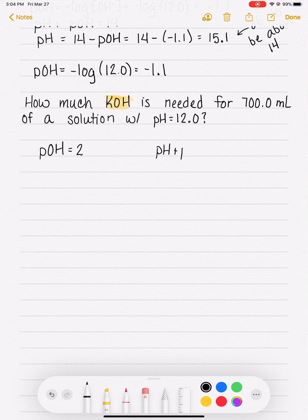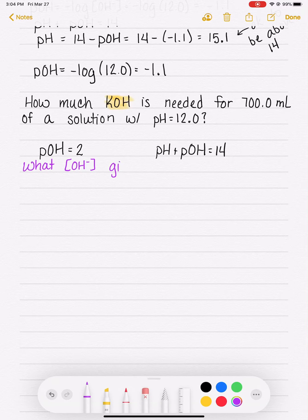we want that solution to have a pOH of 2. Again, because pH plus pOH equals 14. So if the solution has a pH of 12, it must also have a pOH of 2. So the question is, what do we need to do to make a pOH of 2? Or what OH concentration will give us a pOH of 2?